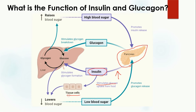Insulin works on the tissue cells and helps them take up glucose. When the tissues take up the glucose, the blood glucose or blood sugar level decreases. Similarly, insulin acts on the liver cells and encourages them to convert the excessive glucose into glycogen.